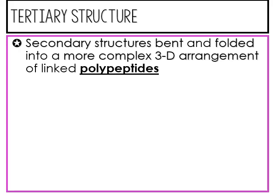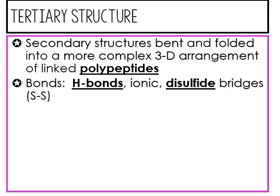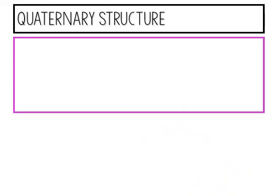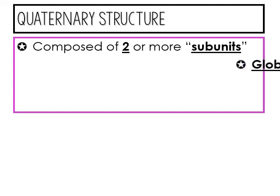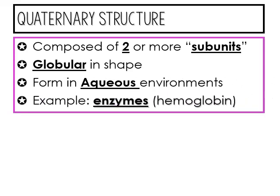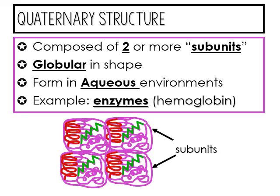The tertiary structure is like the secondary structure — bent and folded — but with a much more complex 3D arrangement of polypeptides. It also has more than just hydrogen bonds; it has ionic bonds and disulfide bridges. The quaternary structure is two or more subunits and looks very globular. You find it in aqueous environments, and this is what an enzyme looks like — two or more tertiary structures combined.